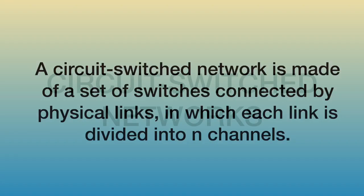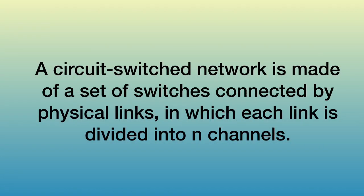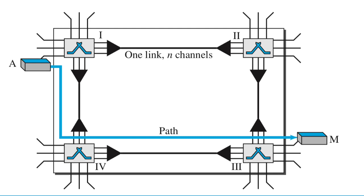Circuit switched network is defined as an example for circuit switched network. In this diagram you can see there are four switches connected through the physical links and each link contains three channels. Here N is equal to 3.